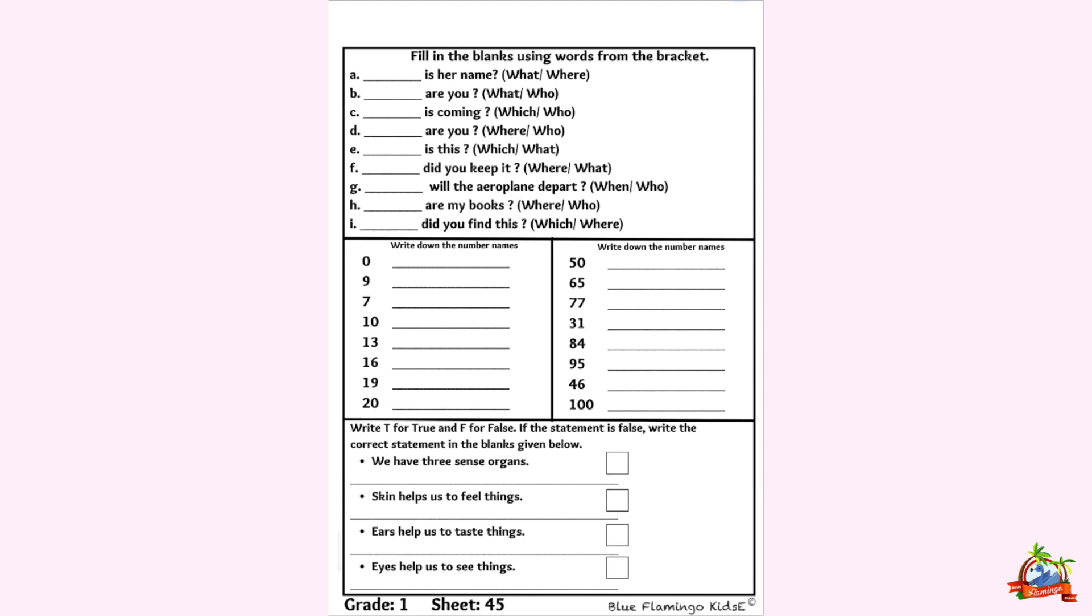Do options hain. Us mein se koi ek option hain ko yahan pe put karna hai. Dash is her name. Us ka naam hai. What? Us ka naam kya hai? So which one is the suitable word? What? What is her name? W-H-A-T. What? What is her name?